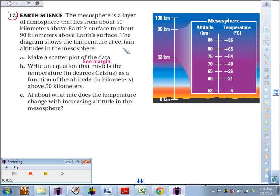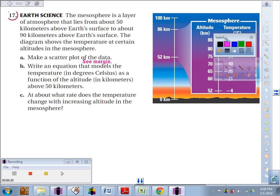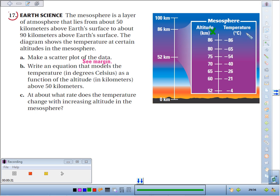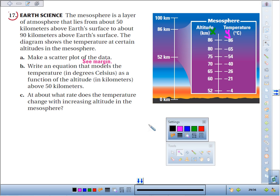Part A: we're supposed to make a scatter plot of the data. Really what they give us are points. We want to think of the altitude as our first variable, we'll call that x, and our temperature in degrees Celsius we'll call that y. So really we've got a table of values.